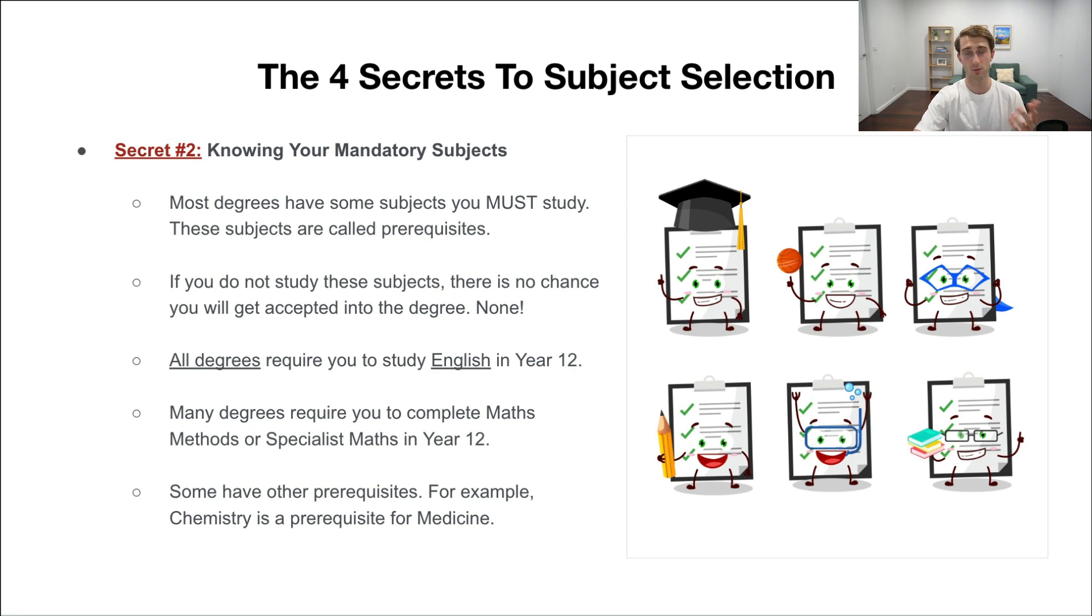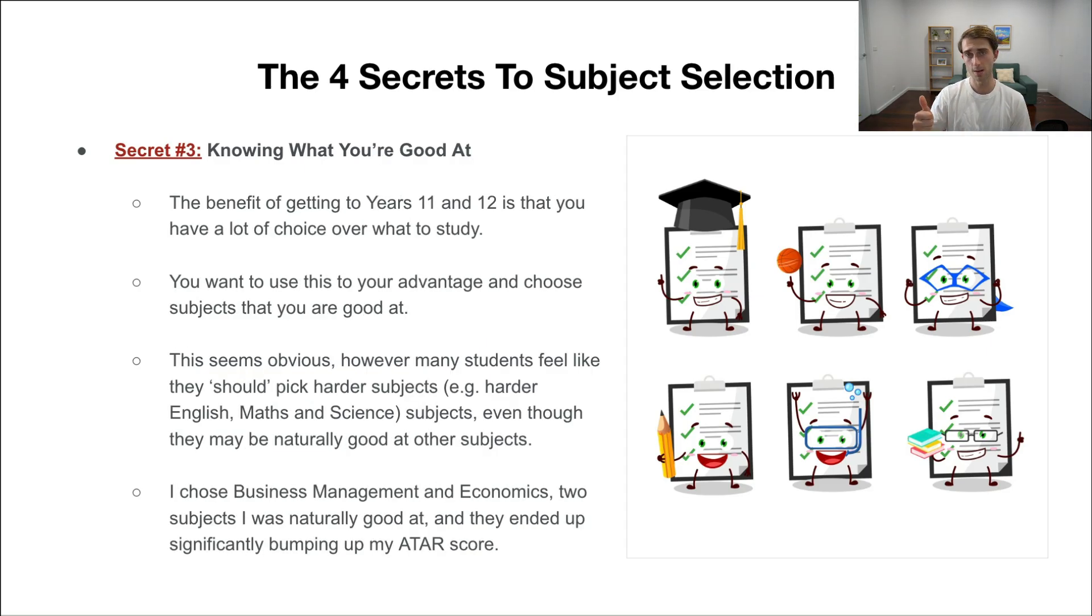Outside of that, though, you have a lot of choice. The question I often get from parents is for the other subjects which aren't prerequisites, what should we choose? What subjects should you choose? How should you determine which ones to choose and which ones to avoid? Is there any advantage in doing certain subjects? There's two key criteria, which is secrets three and four, that I would use to pick these final subjects.